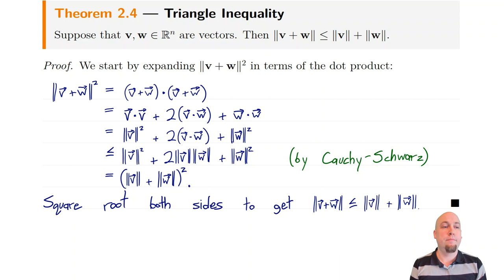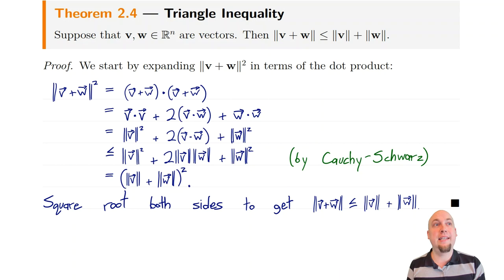That's enough about Cauchy-Schwarz and the triangle inequality for today. In the next lecture, we're going to see another application of the Cauchy-Schwarz inequality — it lets us define the angle between vectors in arbitrary dimensional spaces. I'll see you next class for that.